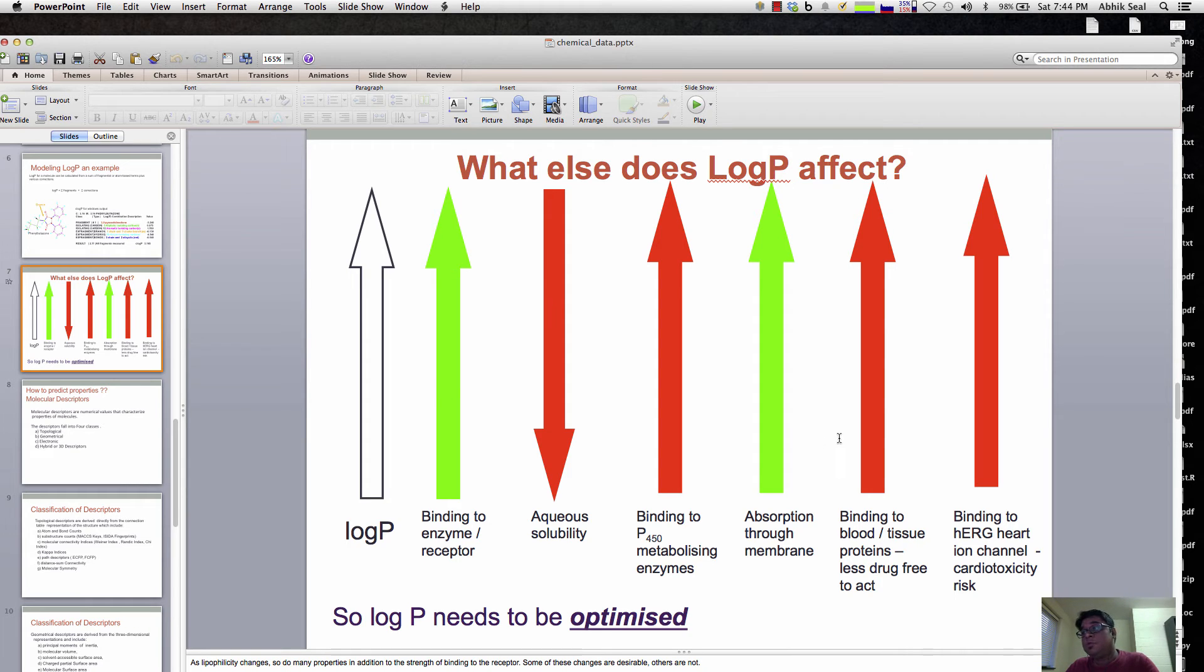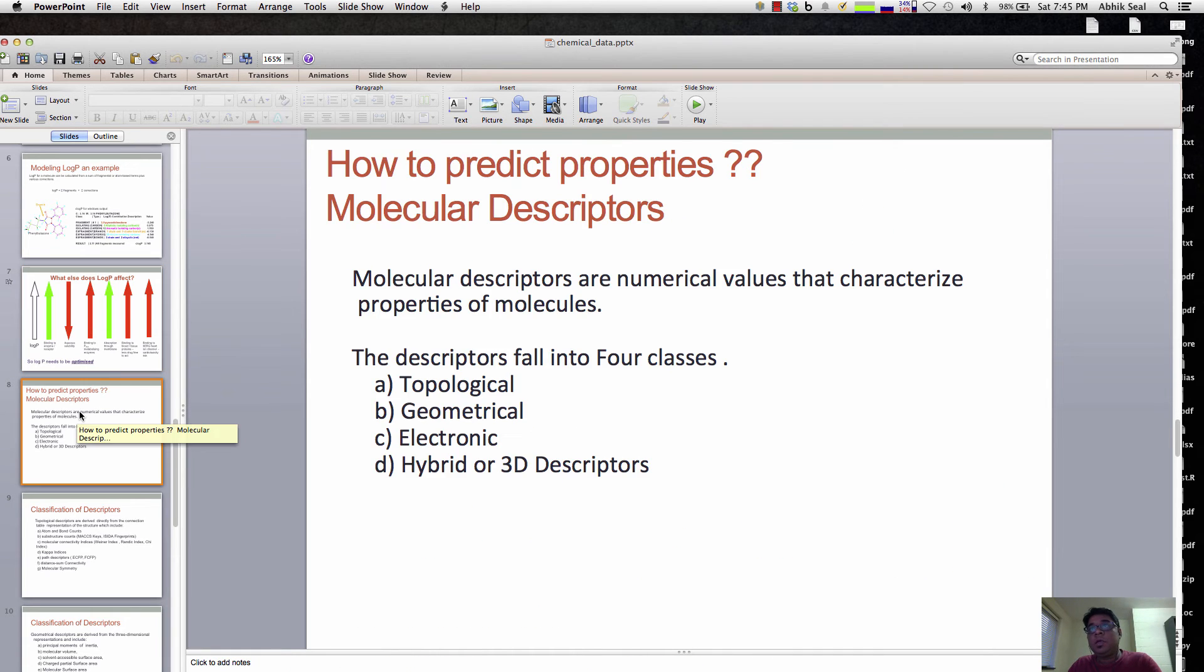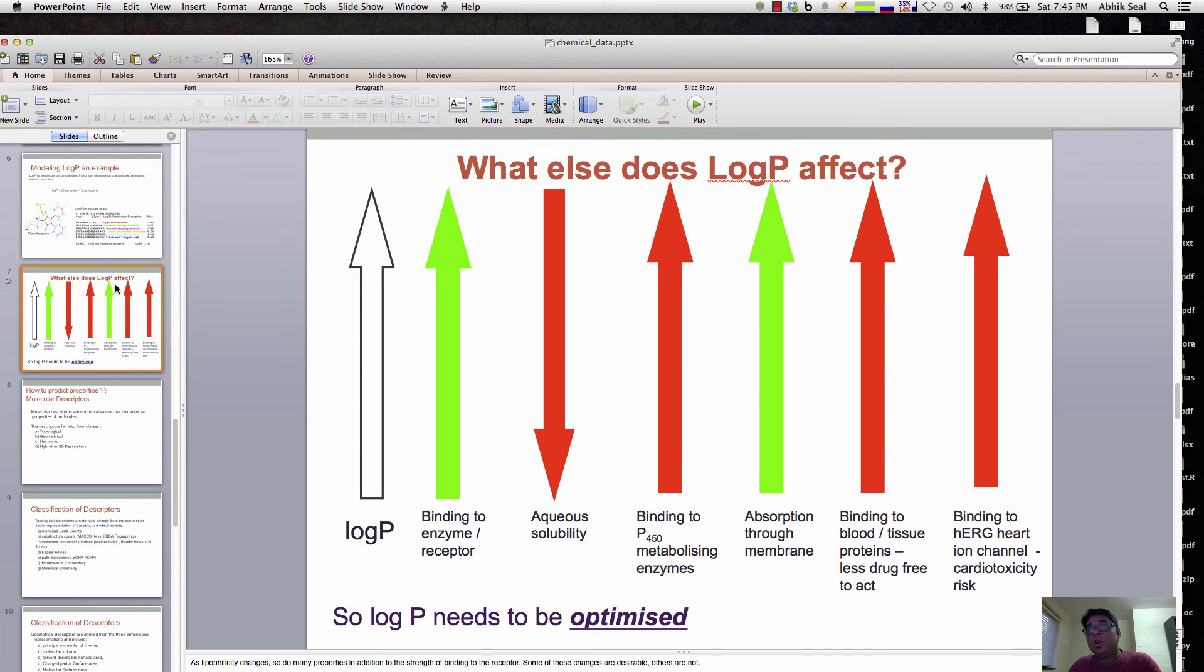You don't want your compound to bind to blood and tissue proteins because it's not binding to the right site of action but to blood proteins and tissue surface proteins, which will decrease the free drug in the system. You need to optimize log P to a certain level so it gets optimized in all these different properties. That's why Lipinski studied all the properties of hydrogen bonding acceptors, log P, and molecular weight to identify certain limits of a drug in a system.